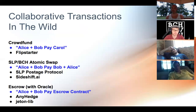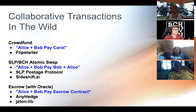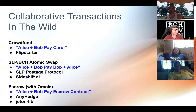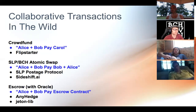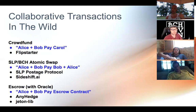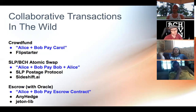Let's talk about collaborative transactions in the wild. Crowdfunding — Alice and Bob pay Carol — is what Flipstarter uses. SWAP isn't Flipstarter, but it helps you do the same type of contract. For the SLP-BCH atomic swap, basically an on-chain exchange in a single transaction, the SLP postage protocol uses this: you send some SLP to the post office, and in exchange the post office adds BCH into your transaction.